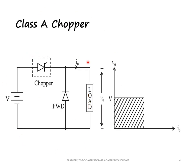The circuit of the class A chopper is shown here. The circuit consists of one switch, a chopper, a freewheeling diode and the load.